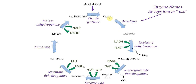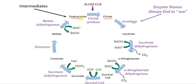The citrate, isocitrate, and all the other names in black are also known as intermediates. We call them intermediates because they're intermediate in the cycle, meaning they don't necessarily stick around for long. They're made and then immediately broken down. So when you hear the term intermediate, we're talking about things like citrate or oxaloacetate that are made as part of the cycle and then turned into something else immediately after.